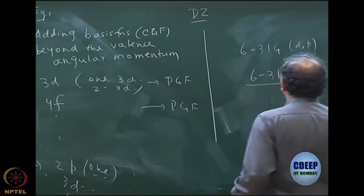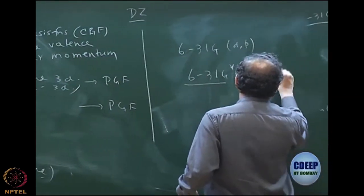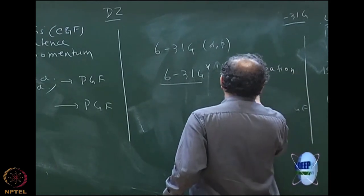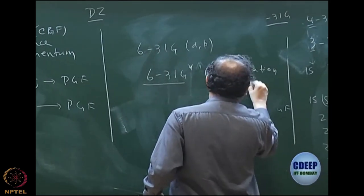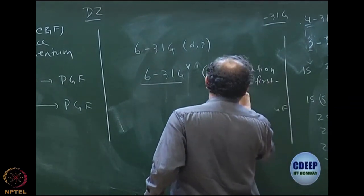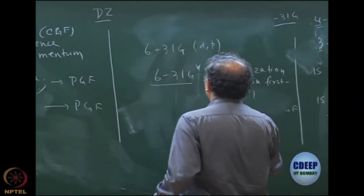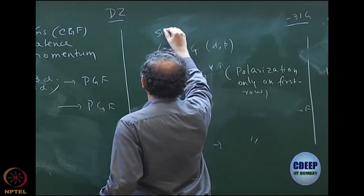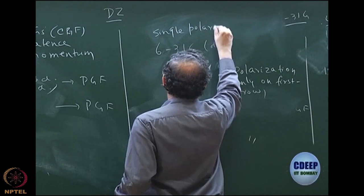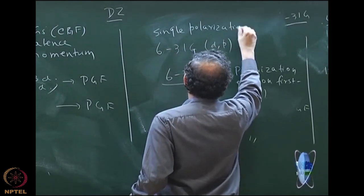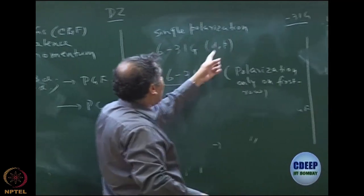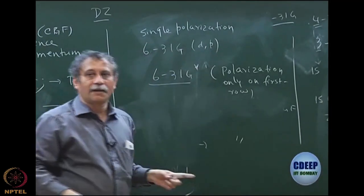So you might have seen 6-31G*. This means polarization and usually only a single polarization function on the first-row atom. These basis sets are typically single polarization function. But today, there are basis sets with more polarization functions — each of them has more D, F, P functions. Your imagination is your limit.